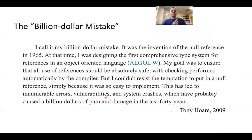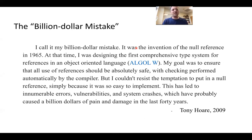Here's an interesting quote — the billion dollar mistake, by Tony Hoare. He said: 'I call it my billion dollar mistake. It was the invention of the null reference in 1965. My goal was to ensure that all use of references should be absolutely safe with checking performed automatically by the compiler — that's what we get with the maybe type. But I couldn't resist the temptation to put in a null reference simply because it was so easy to implement. This has led to innumerable errors, vulnerabilities, and system crashes, which have probably caused a billion dollars of pain and damage in the last 40 years.'